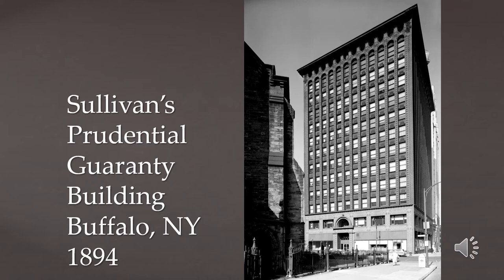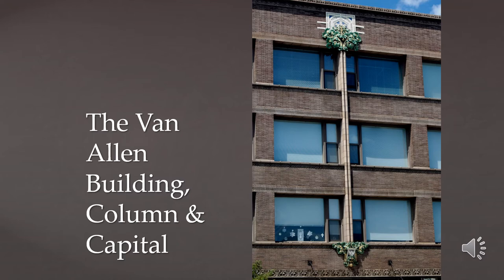In Sullivan's buildings you see a brick pattern with very horizontal lines of brick, which you'll also see Frank Lloyd Wright using in his Prairie style buildings. The Van Allen Building in Clinton, Iowa — designed for a department store with apartments above — was unique in being planned around the interior space, which created an awkward rhythm on the facade. Sullivan applied these decorative celery-stalk-looking mullions on the front, which accentuate the height of the building and create a rhythmic pattern that helps balance it visually.